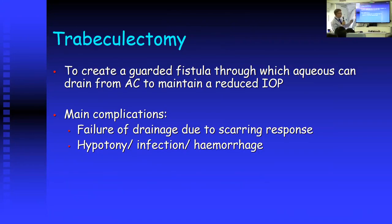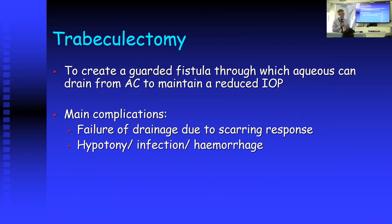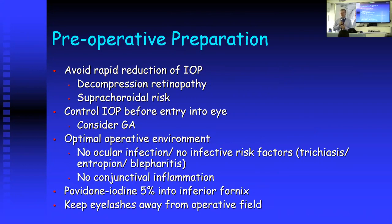The basic idea of a trabeculectomy is that we want to create a fistula draining aqueous from the anterior chamber to the subconjunctival space to maintain a low intraocular pressure. The main complications we want to avoid are firstly the scarring response, which stops the drainage of aqueous, and the major complications of hypotony, infection, and hemorrhage.